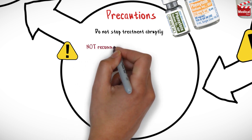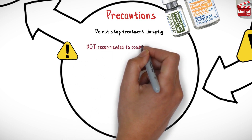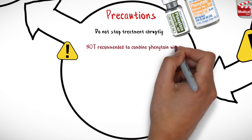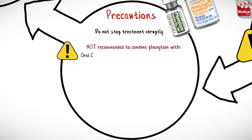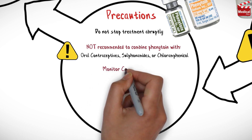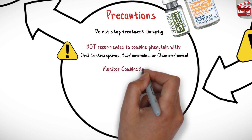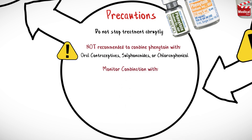It is not recommended to combine phenytoin with oral contraceptives, sulfonamides, or chloramphenicol. Combination with other drugs must be closely monitored, such as diazepam, phenobarbital, digoxin and corticosteroids.